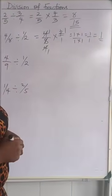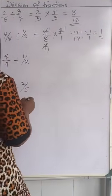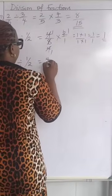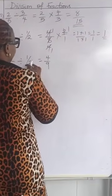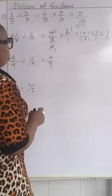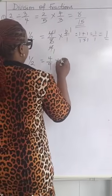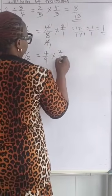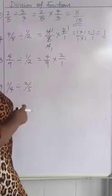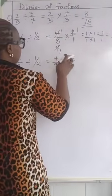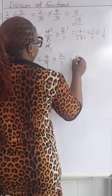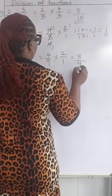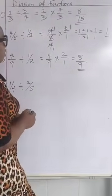Let's look at number 3. Number 3 says 4 over 9 divided by 1 over 2. So we have the inverse. Nothing can divide here. So we have 4 times 2 is 8, and 9 times 1 is 9 as our final answer.